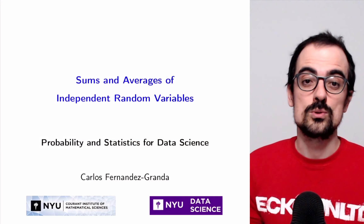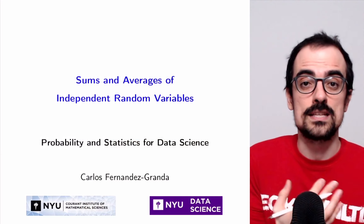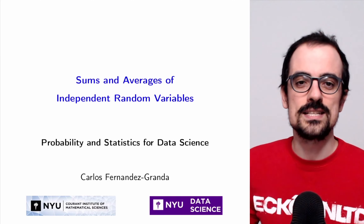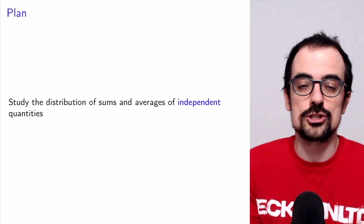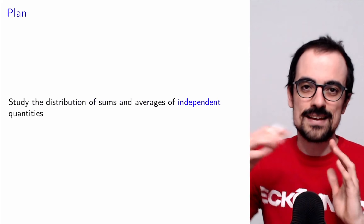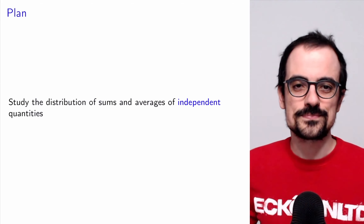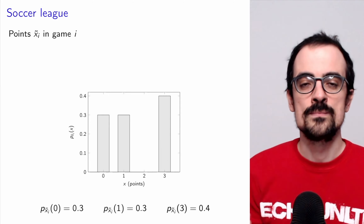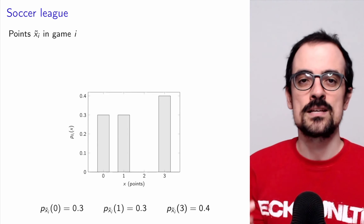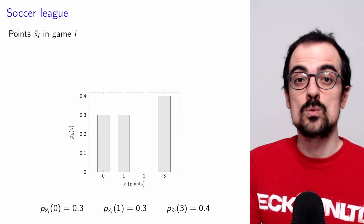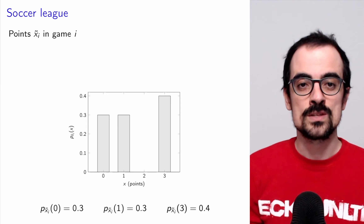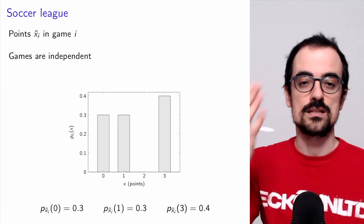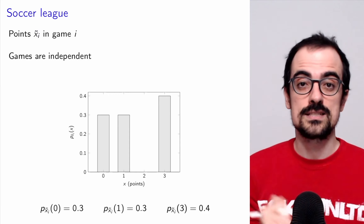Let's get to it. We're going to study sums and averages of independent random variables, since random variables is what we use to represent uncertain quantities, and specifically we want to study the distribution and understand why eventually it becomes Gaussian. We're going to begin with a simple example where we're trying to model the number of points gained by a soccer team in a league where they're playing different teams. We'll assume that the points gained in the different games are independent and all have the same distribution.